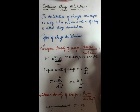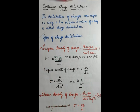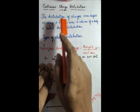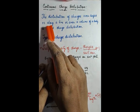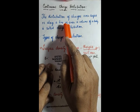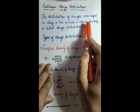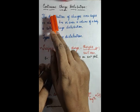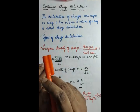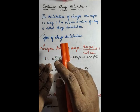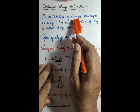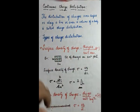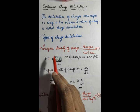Continuous charge distribution is very simple: it is the distribution of charges over a surface, a length, or a volume. Distribution of charges over a surface, a length, or a volume — that is what is called continuous charge distribution.